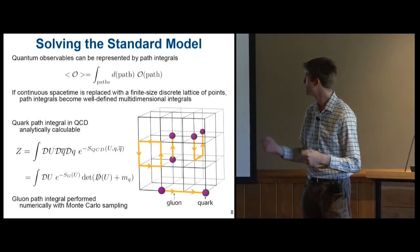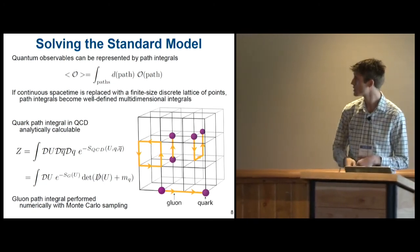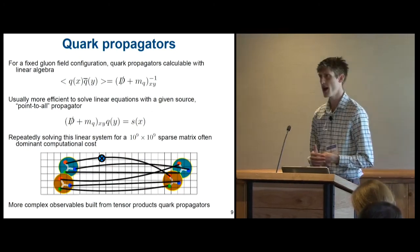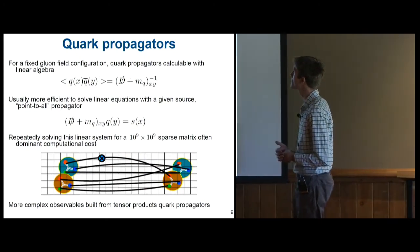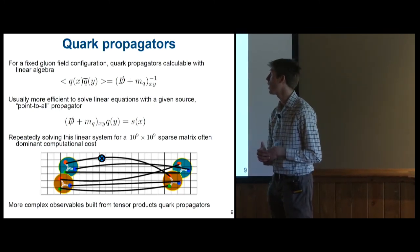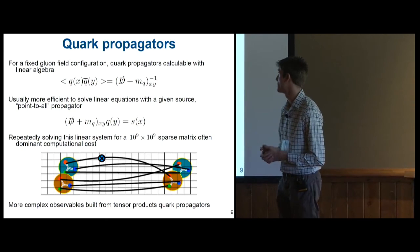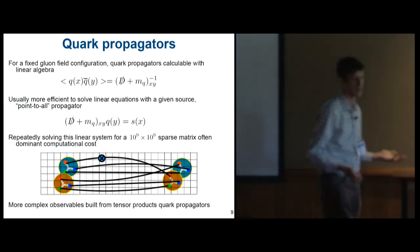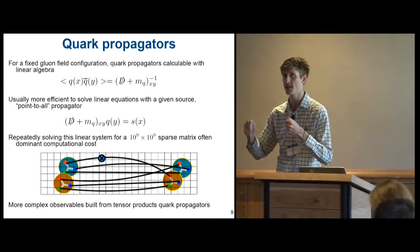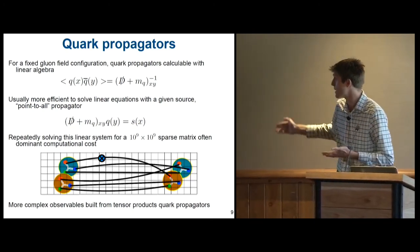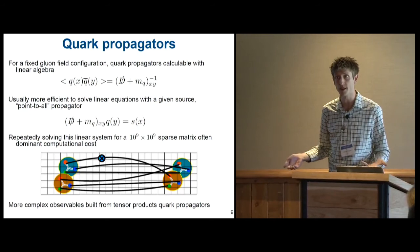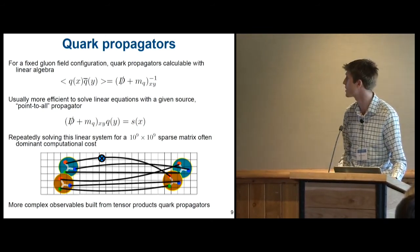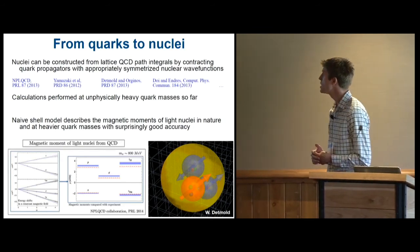The quark part of this turns out to be easy. You can analytically perform the path integral for a determinant. So what we need to do is numerically Monte Carlo sample possible gluon fields. And then on each one, we calculate quark propagators. And this part is just linear algebra. So a quark propagator is just the inverse of this matrix shown here. So all we need to do is solve mx equals b, where I've given mx and b slightly more complicated names. But the problem is that since this exists everywhere in spacetime, this is a billion by billion dimensional matrix. And so the linear algebra becomes complicated. But once you have it, more complex observables are just built from tensor products and contractions of these quark propagators.